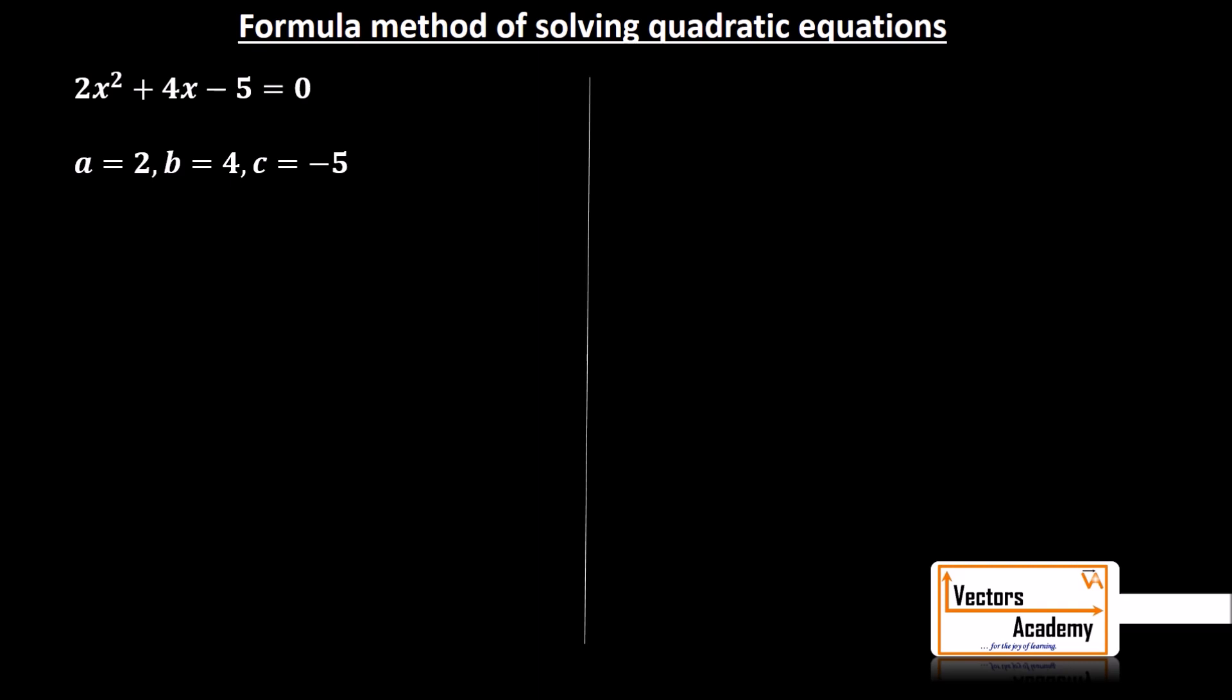Now, formula method is actually the simplest method to solve quadratic equations. All we have to do is to remember the formula, i.e. x is equal to minus b plus minus root of b² minus 4ac upon 2a.